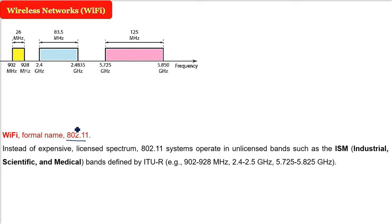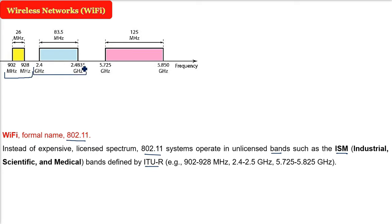Wi-Fi uses unlicensed spectrum. Most frequencies we see are licensed by the government, and mobile cellular networks also use them. But Wi-Fi uses the unlicensed ISM band — Industrial, Scientific, and Medical — reserved for research purposes. ITU-R has bands 902–928 MHz for industry, 2.4–2.5 GHz for scientific usage, and 5.725–5.825 GHz for medical use. These are free, unlicensed bands available if you work in any of these fields.